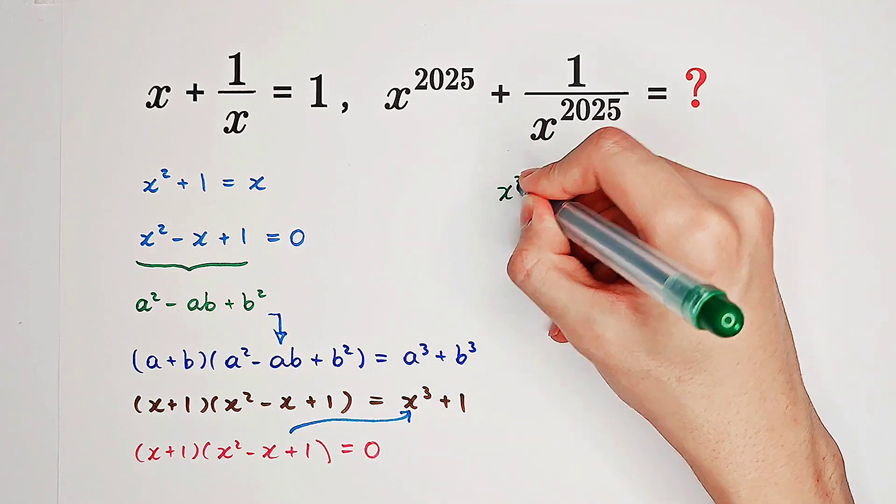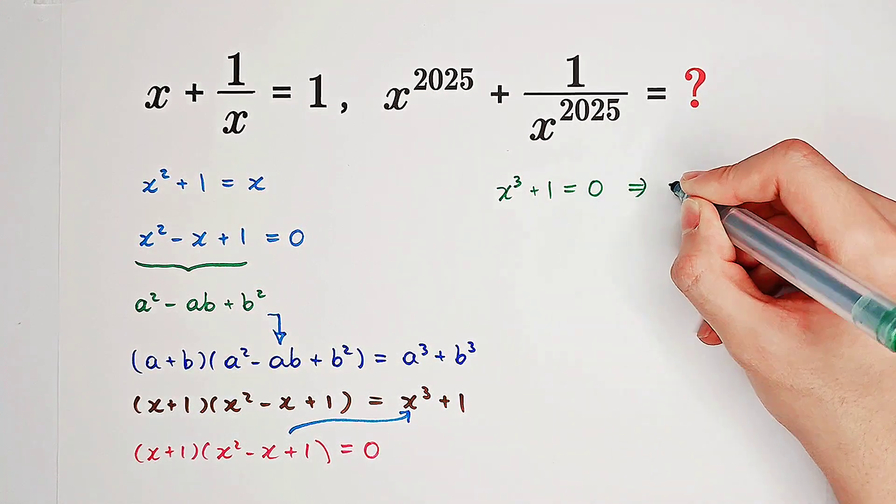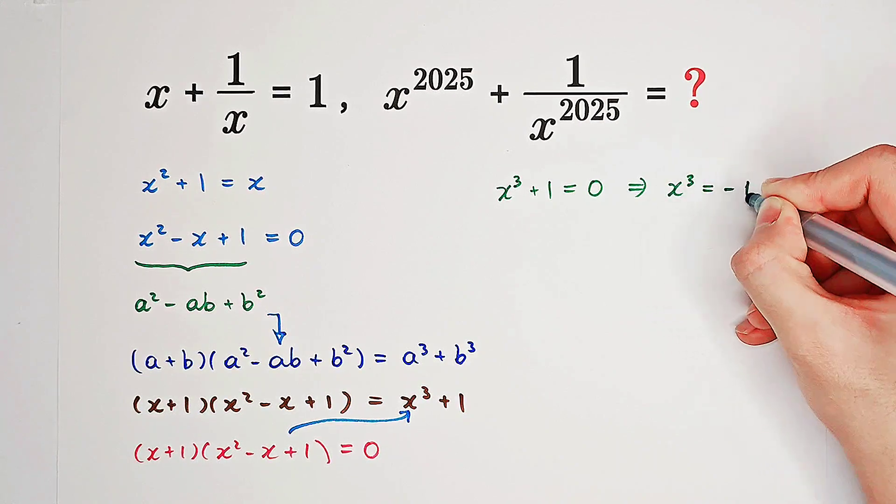So, we get x cubed plus 1 equals 0. And therefore, x cubed is negative 1.